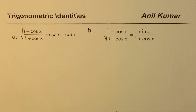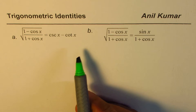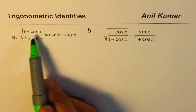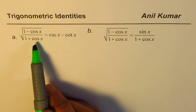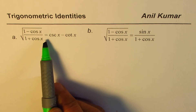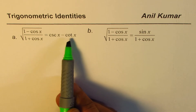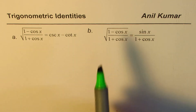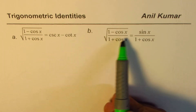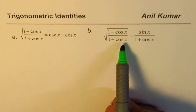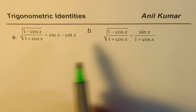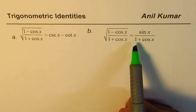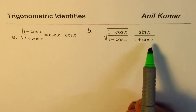We have two very similar questions here. Part A is: square root of (1 minus cos x) divided by (1 plus cos x) equals cosecant x minus cotangent x. And Part B is: square root of (1 minus cos x) divided by (1 plus cos x) equals sin x divided by (1 plus cos x).